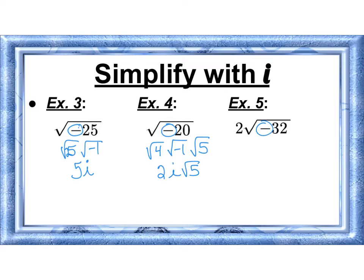And negative 32 we've seen before is 16 and 2. 16 is the biggest perfect square. This 2 just continues down. So I have 2 times the square root of 16 times the square root of negative 1 times the square root of 2, which becomes 2 times 4 times i times root 2, which is 8i square roots of 2.